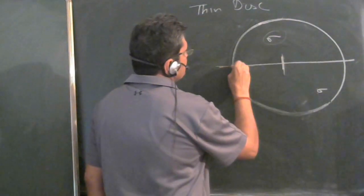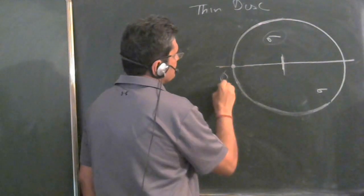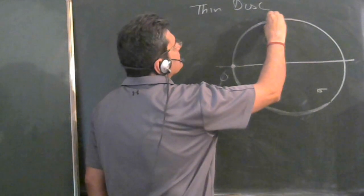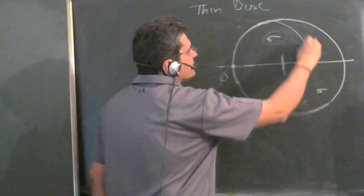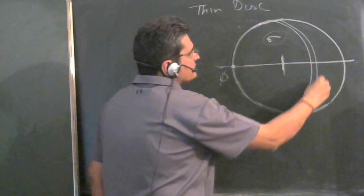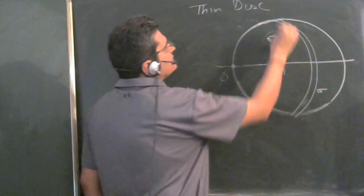Now to find the potential here, phi, because of the disk, let us take an arc like this. We will divide the disk in different arcs.